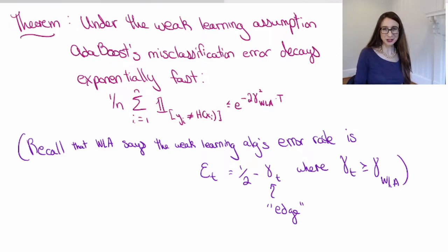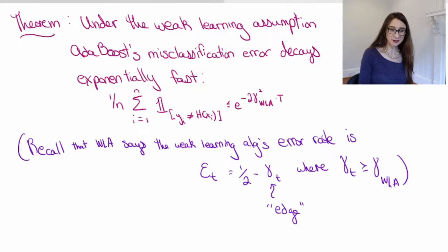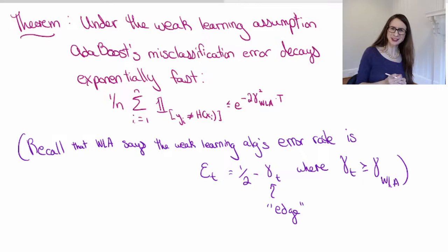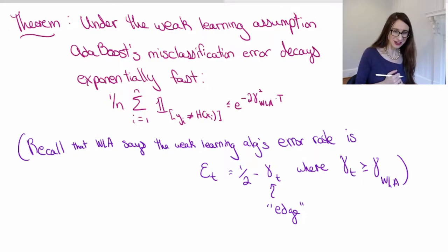AdaBoost has a really interesting convergence property under the weak learning assumption, which is that its error rate decays exponentially fast. So weak learning is a lot stronger than you might actually think it is.